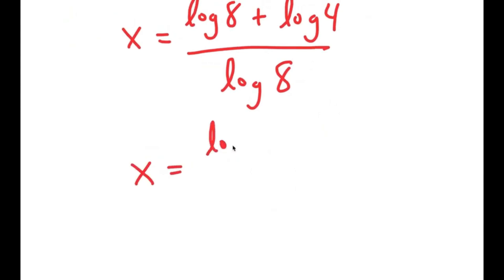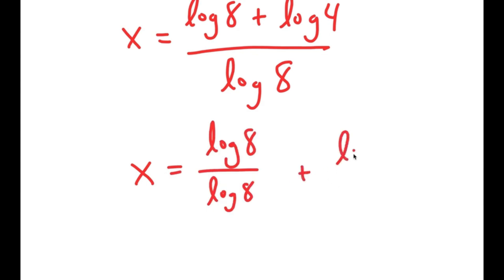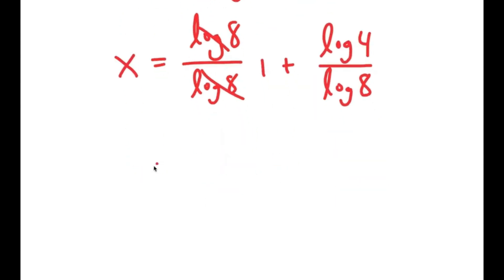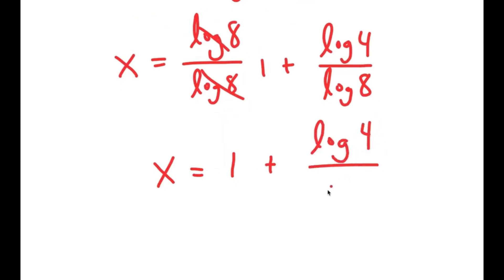This turns into log 8 over log 8 plus log 4 over log 8. These two cancel out to get 1. So I get x is equal to 1 plus log of 4 over log of 8.